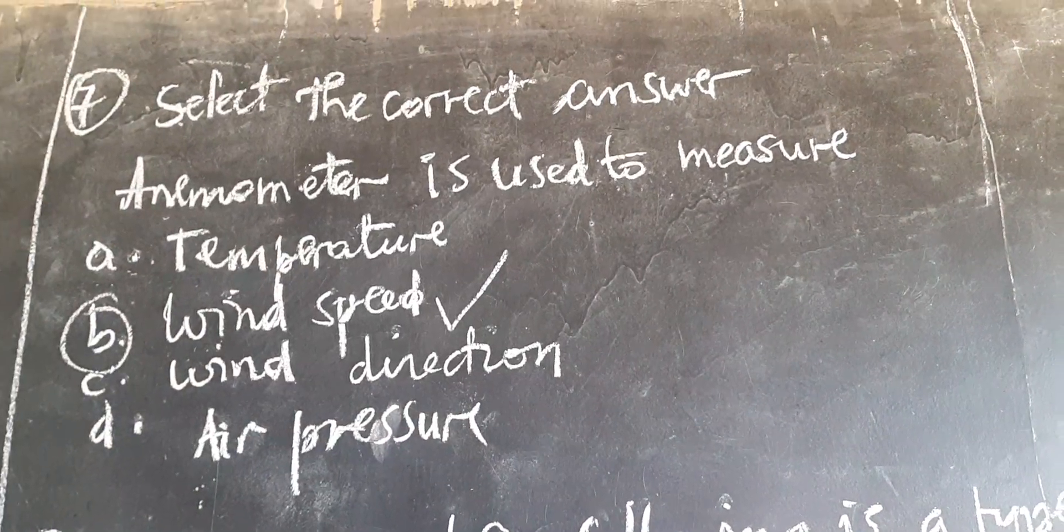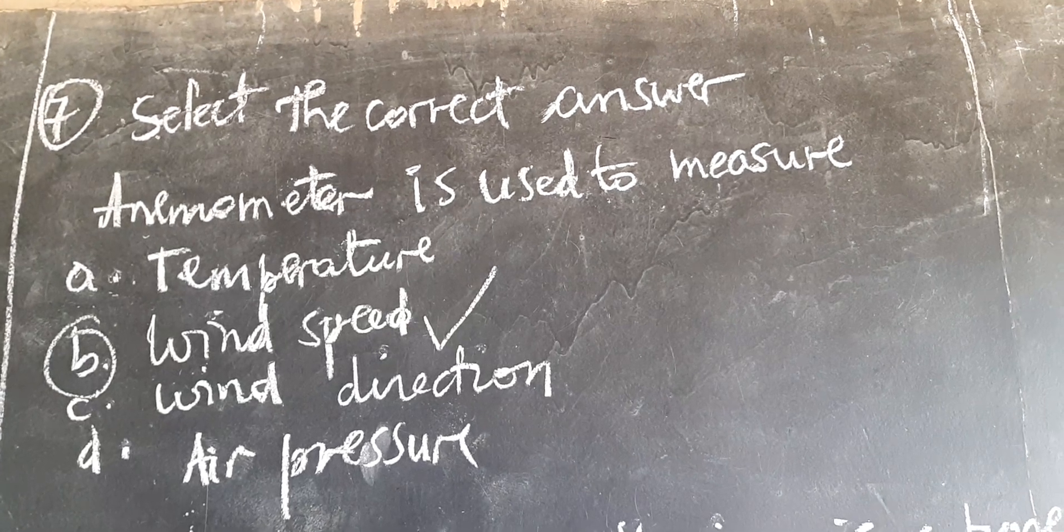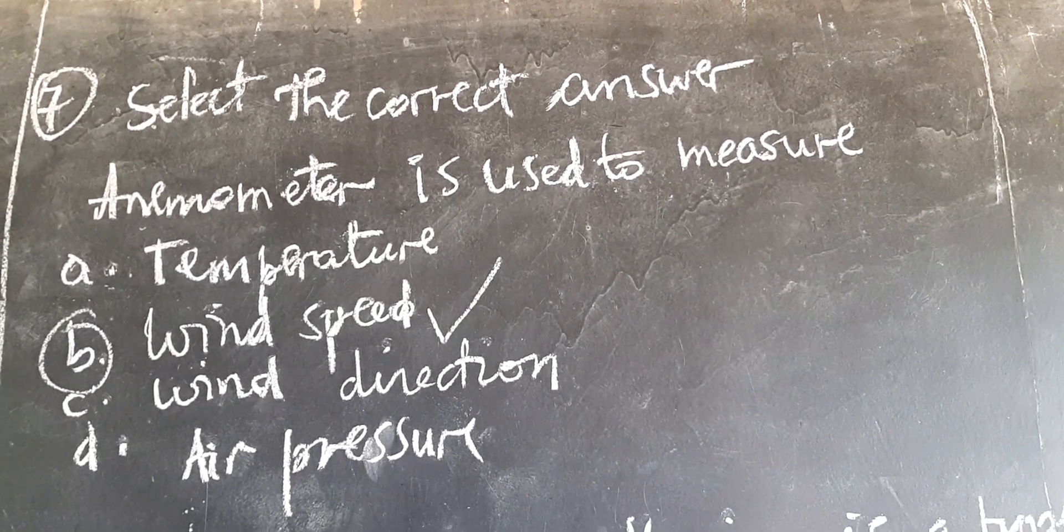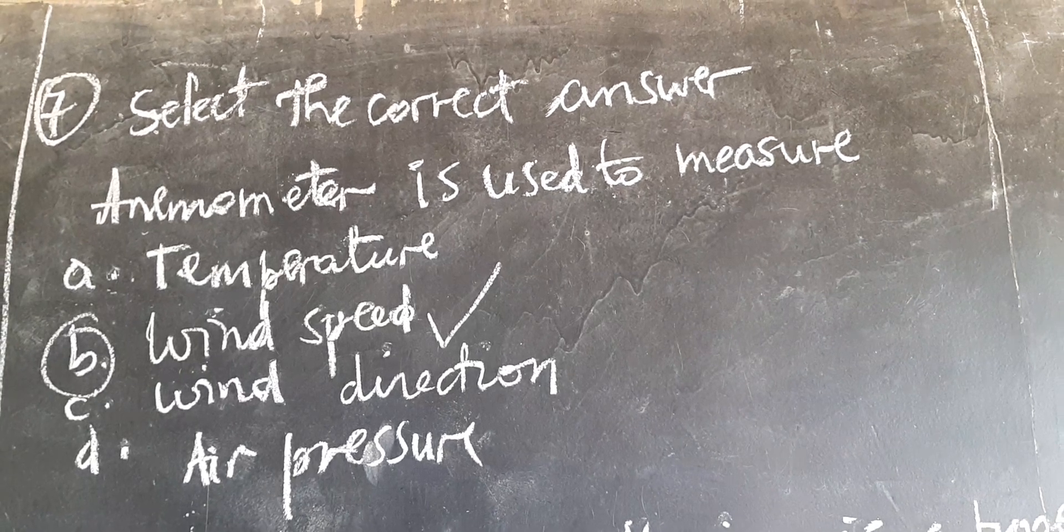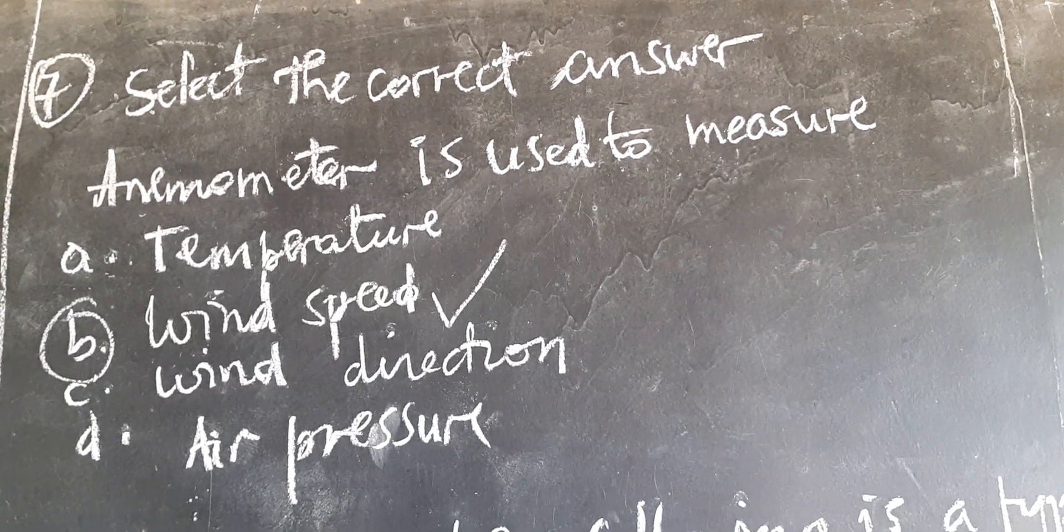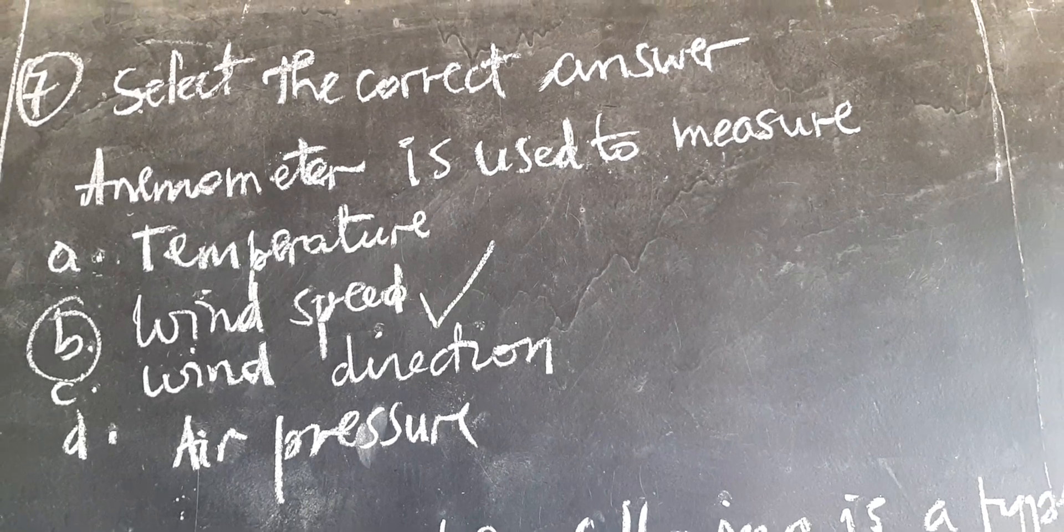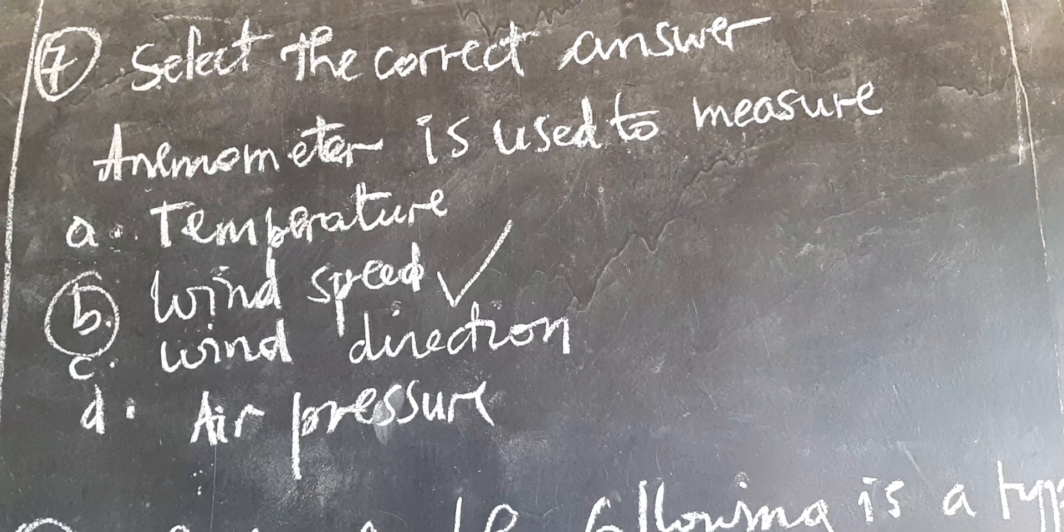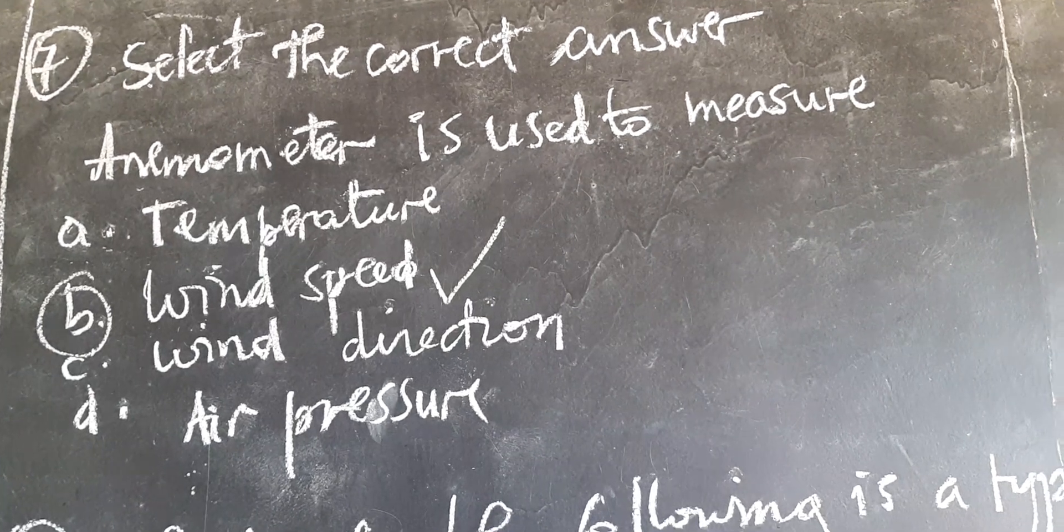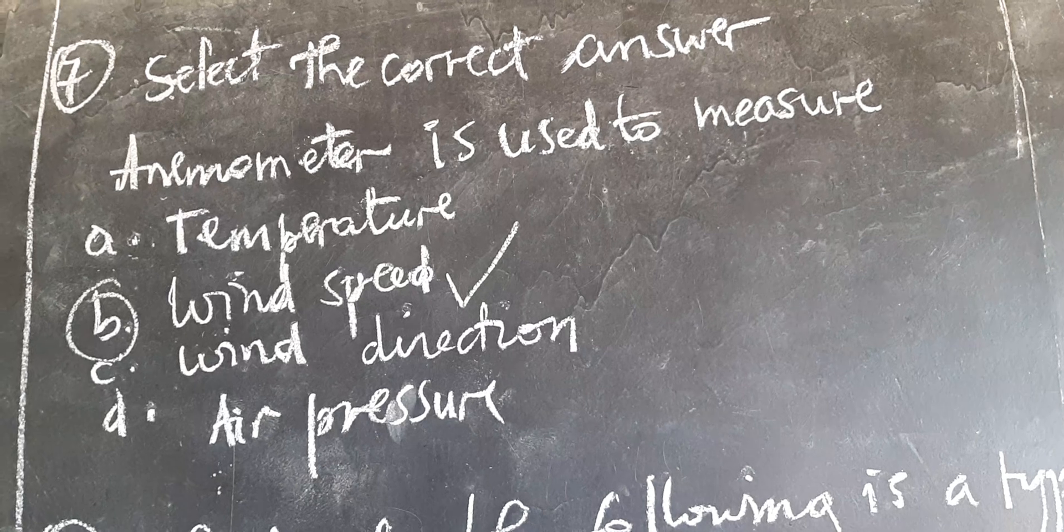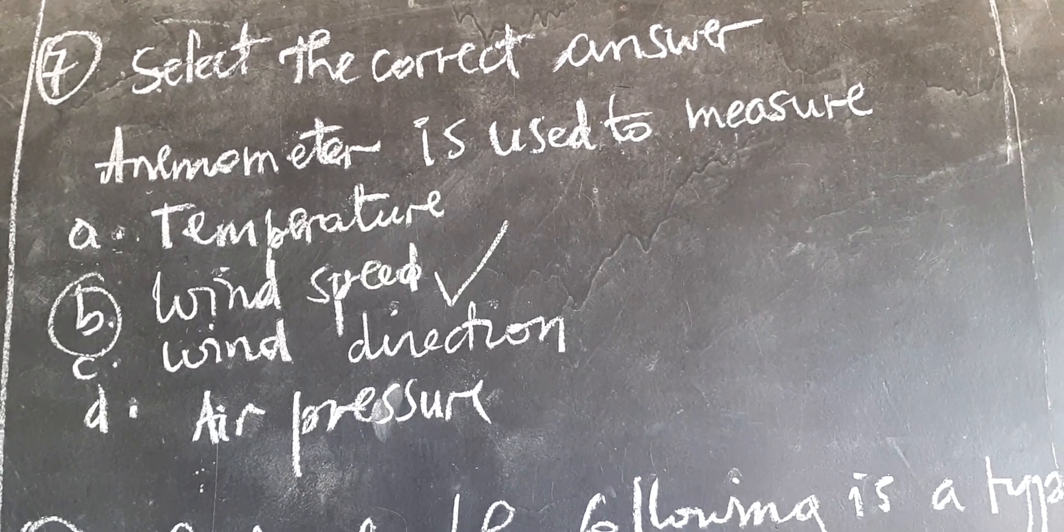Let's go to the next question. Question number seven is asking, select the correct answer. Anemometer is used to measure A. Temperature, B. Wind speed, C. Wind direction, D. Air pressure. So the correct answer is wind speed, because anemometer is used to measure the speed of wind. So therefore the correct answer is B.